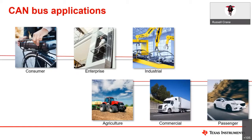CAN bus has come a long way. Today it's a very ubiquitous interface used across many different applications, whether it be consumer applications, enterprise like elevators, industrial — which is a big play for CAN — agriculture, commercial vehicles, asset tracking, and passenger vehicles, of course, which is one of the bigger reasons why we're here today.